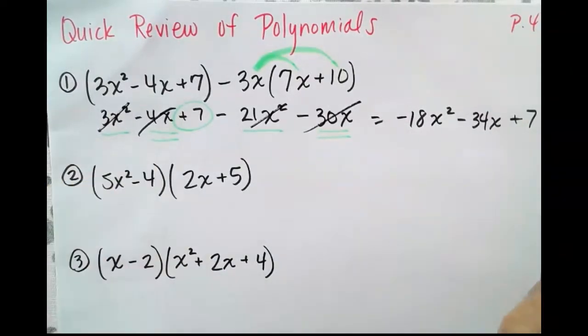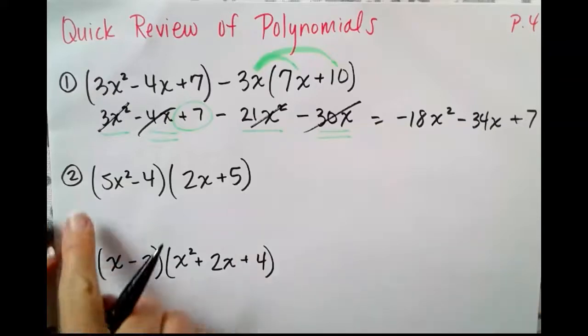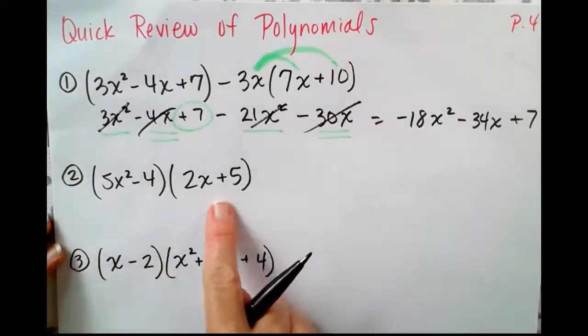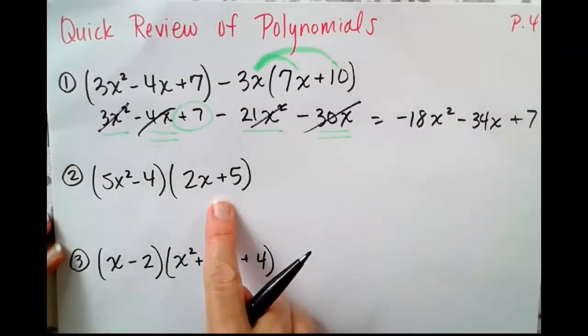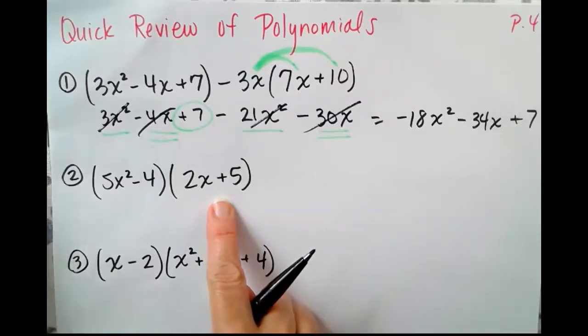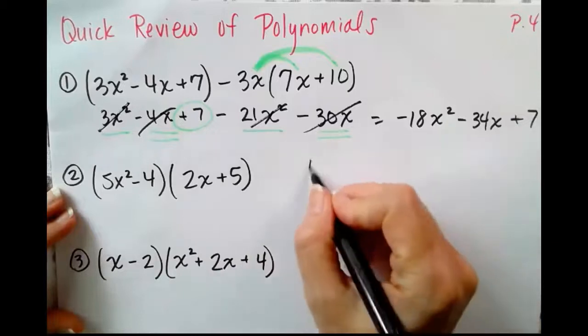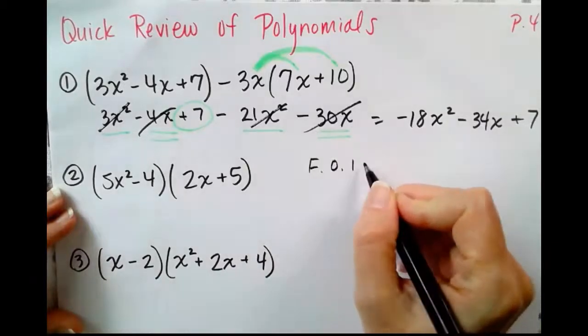This is our simplified answer. Remember, we're simplifying here, not solving. We only solve when our original problem is set equal to something. Number 2 is a binomial times a binomial.